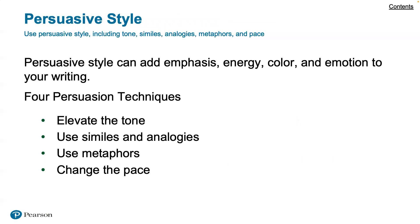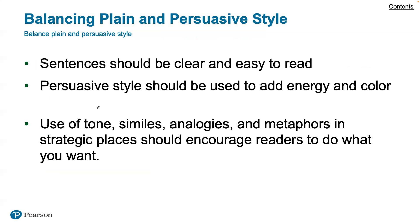Persuasive style can add emphasis, energy, color, and emotion to your writing. There are four persuasive techniques: elevate the tone, use similes and analogies, use metaphors, and change the pace. Using more color in your language helps readers connect emotionally or see more concrete evidence for why something makes sense. Changing the pace can also help with persuasion — though this all assumes that your document actually needs to be persuasive.